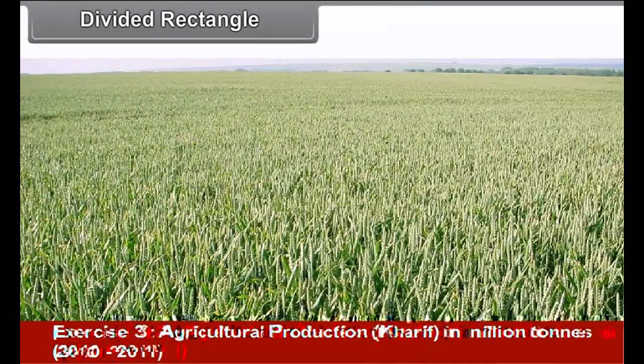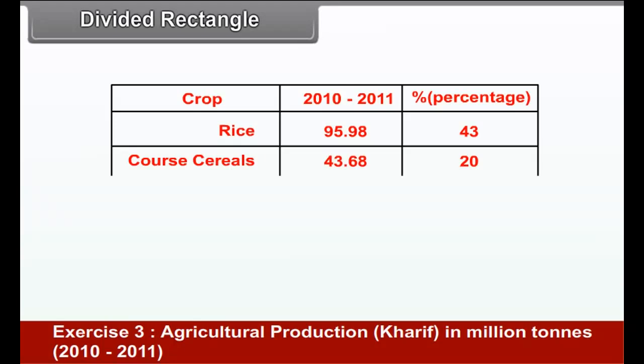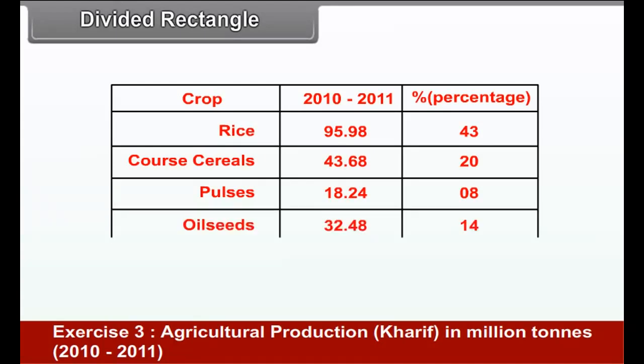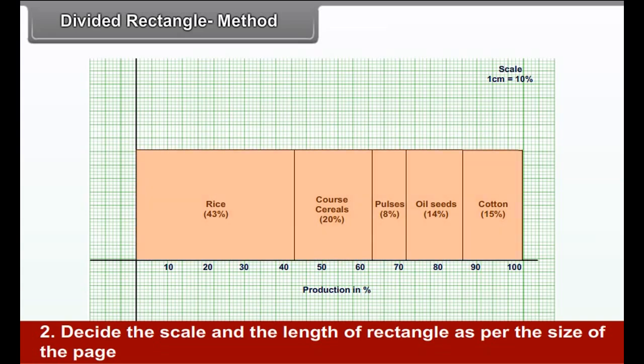Divided rectangle: A rectangle is proportionately divided to represent different sub-factors of any data. It is drawn on the basis of given statistical values. Generally, data is in the form of percentage. If they are not in percentage form, they should be converted into percentage. The total area of the rectangle is considered as 100% and it is divided according to the percentage of each sub-factor. Since each subunit, which is shown in the rectangle, has a separate identity, each one can be shaded differently and a legend can be given to understand it easily.